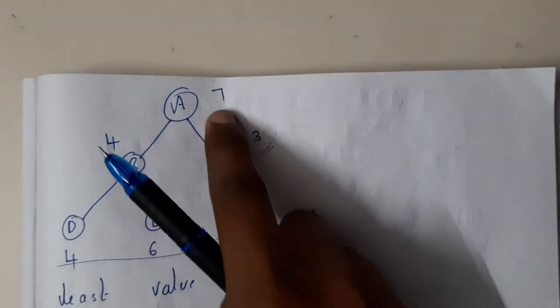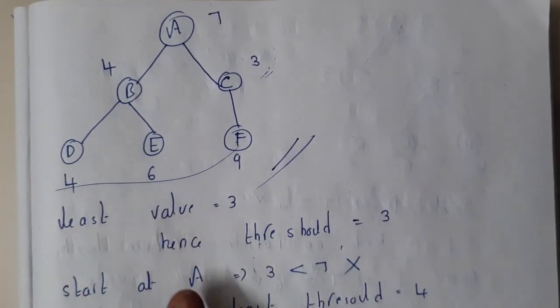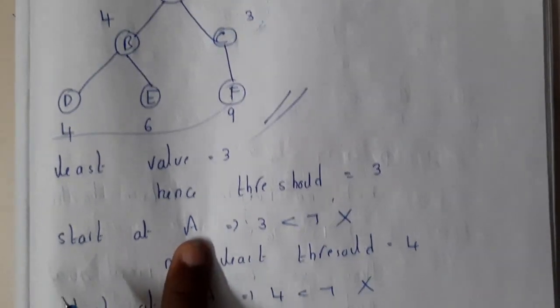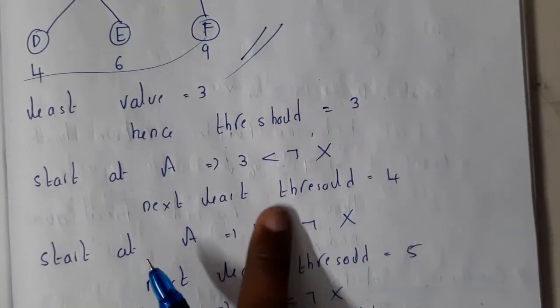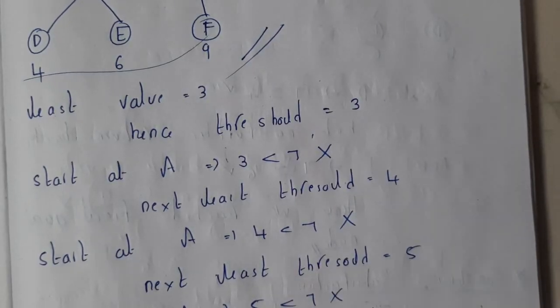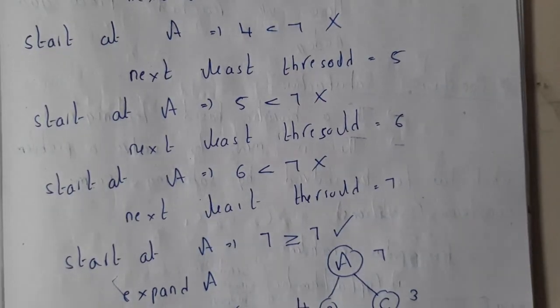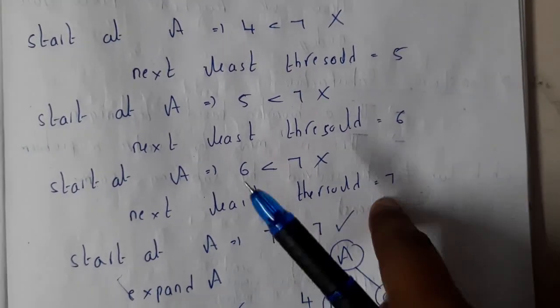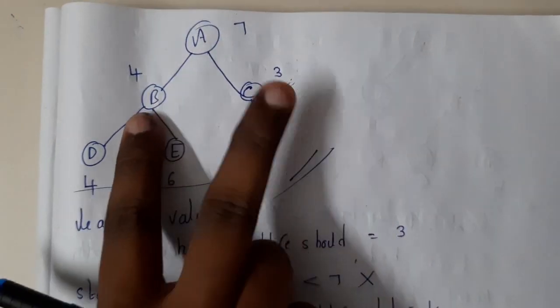So that is the reason why least value is 3, hence threshold is 3, but start symbol A has value 7. So 3 is less than 7, so it is rejected. So the next value in least is 4, so 4 is also rejected as 4 is less than 7. Next to 5, 5 is also rejected because it is less than 7. 6 is also rejected because it is less than 7. Whereas 7 will be accepted because it is greater than or equal to 7.